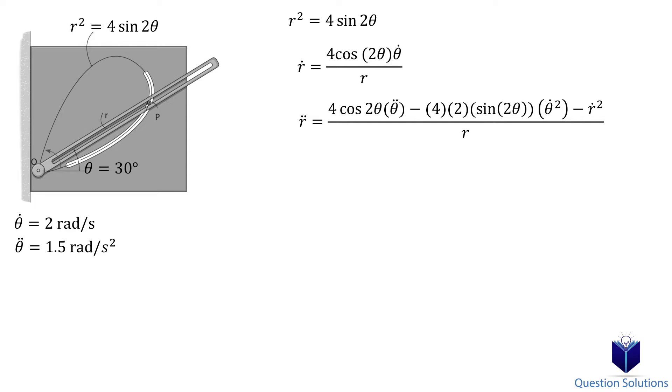If you don't know how to do this, there is a link in the description below. Now it's just a matter of plugging in values into our magnitude of velocity equation. We're finding these values at 30 degrees. To get r isolated, we just need to take the square root of both sides.